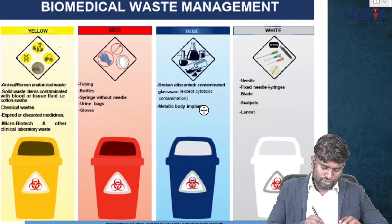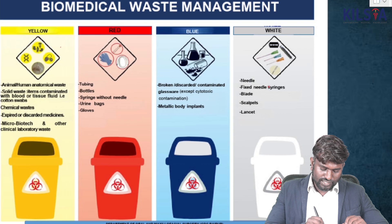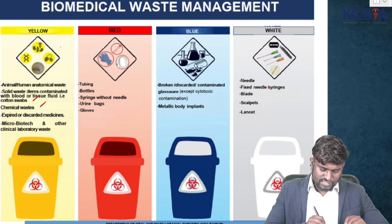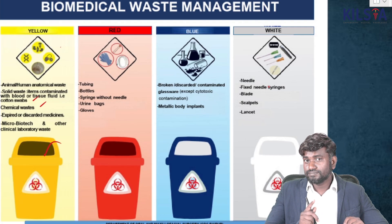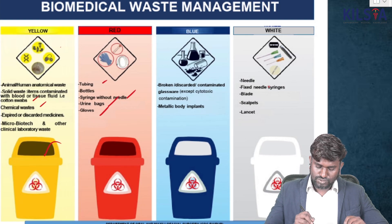A quick revision of biomedical waste. You have the yellow bin: anatomical waste — animal and human — solid items, contaminated blood or tissues with fluid, cotton swabs, chemical waste, and expired or discarded medicines are discarded in the yellow bag. Red bag: please remember. Syringes without needles, urine bags, gloves, and tubes — they are all put in the red bag.